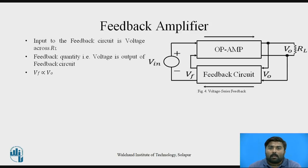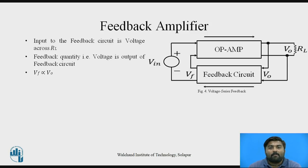First is the voltage series feedback amplifier. Figure 4 shows the voltage series feedback amplifier. As mentioned, it has two parts: the op-amp and the feedback circuit. The op-amp has two inputs and an output, VO, which is the voltage across load resistor RL. That output of the op-amp is connected as input to the feedback circuit. The feedback circuit output is VF, which is connected back as input to the op-amp. So the op-amp has two inputs: V-in (the voltage source) and VF (the feedback output voltage). The input to the feedback circuit is the voltage across RL, and the feedback quantity is voltage, so VF is directly proportional to VO.